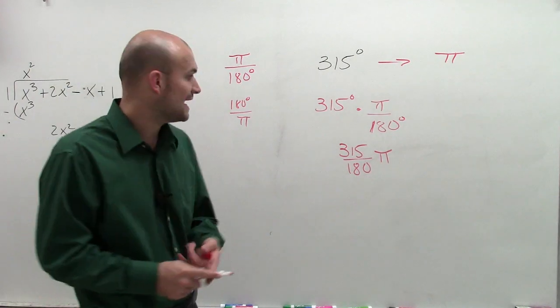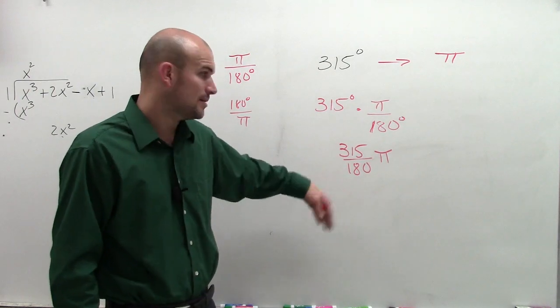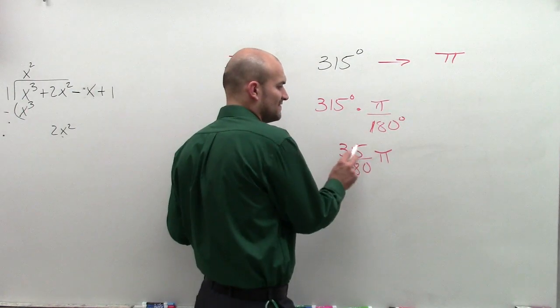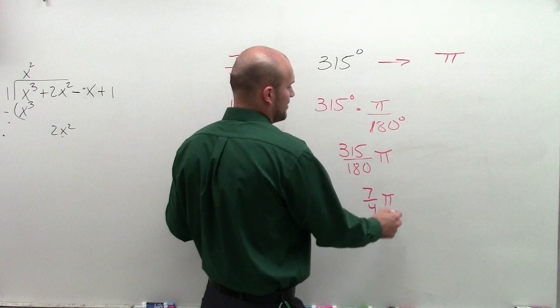60, 90 - those aren't going to work with 315. But if I look at another possible angle like 45, I notice that I can divide 45 into the top and bottom, and I can reduce this down to 7 fourths pi.